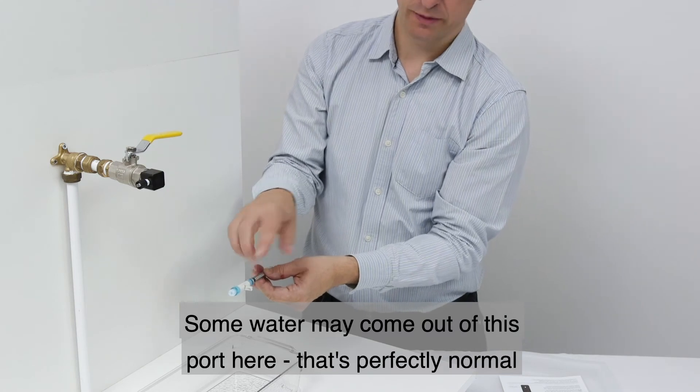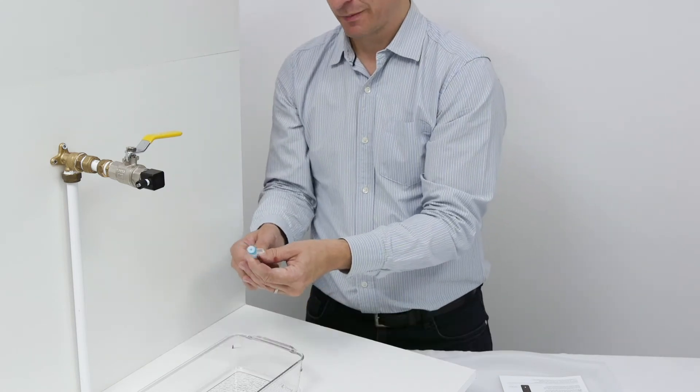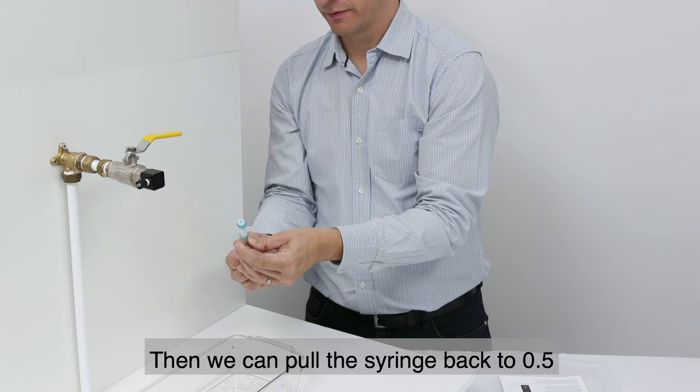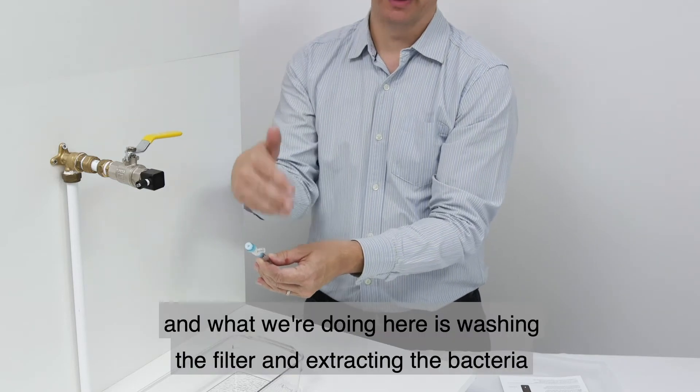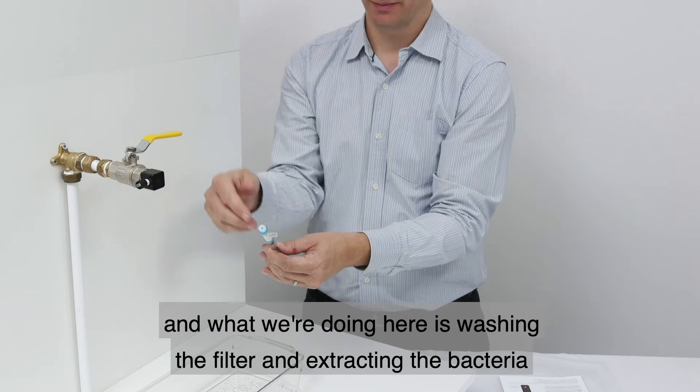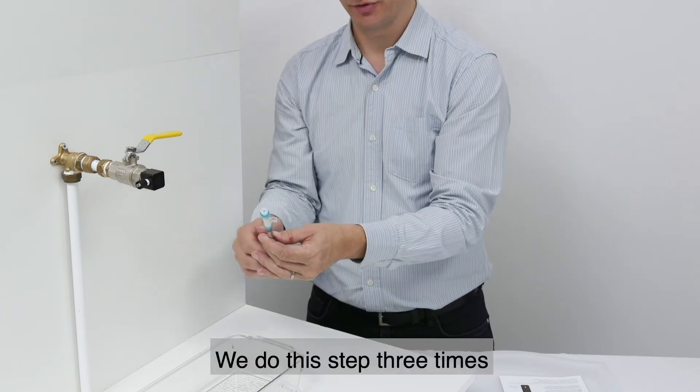Some water may come out of this port here—that's perfectly normal. And we can pull the syringe back to the 0.5 and push it in. What we're doing here is washing the filter and extracting the bacteria. We do this step three times.